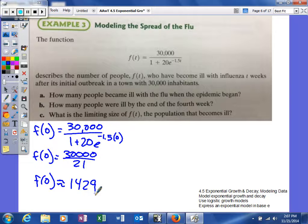Part B asks us how many people were ill by the end of the fourth week. This time, we're just going to plug in 4.